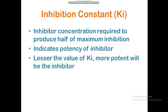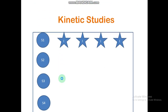The inhibition constant Ki is important — it is the inhibitor concentration required to produce half of the maximum inhibition. It indicates the potency of the inhibitor, and a lesser value of Ki means the inhibitor is more potent.